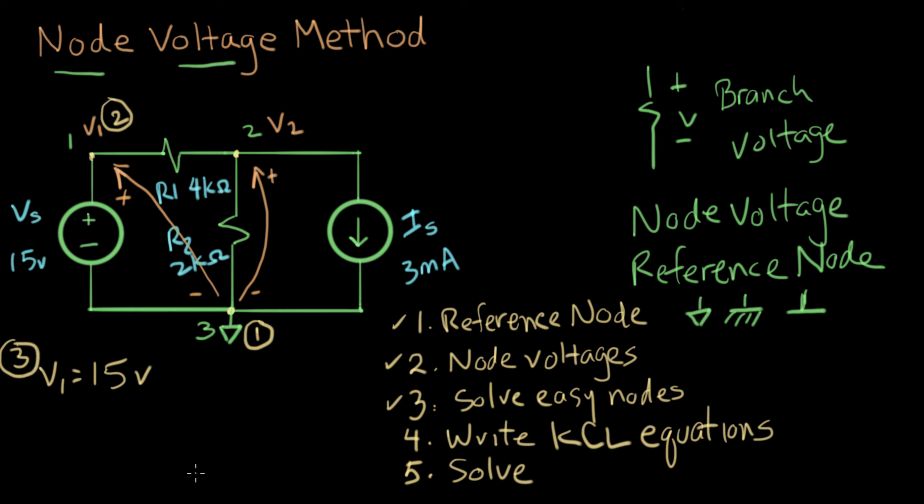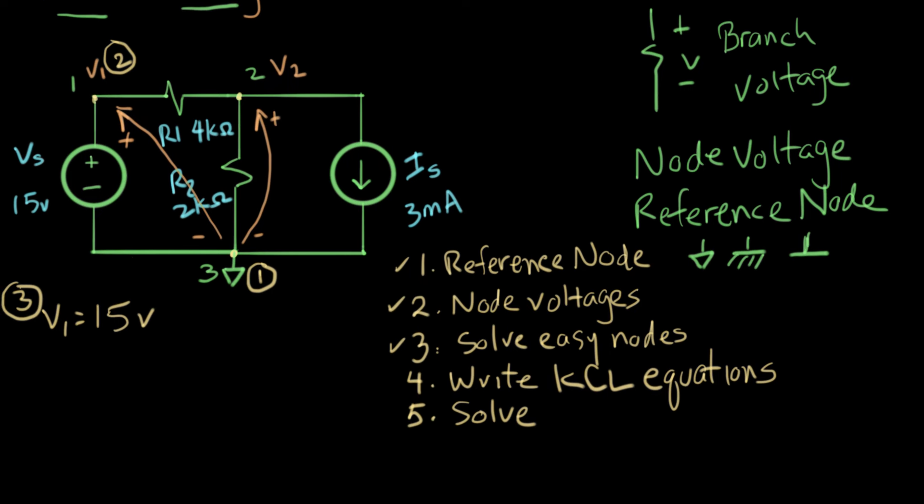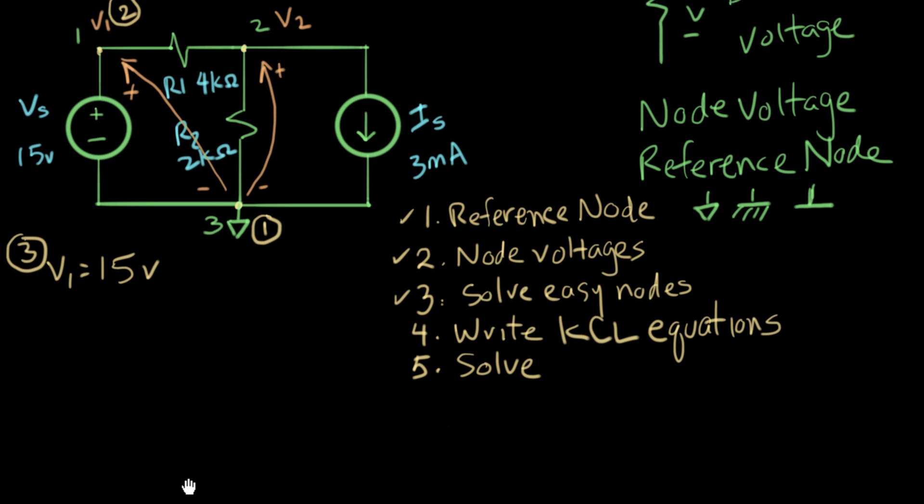Now we're ready to go to step four. Step four is write the Kirchhoff's current law equations directly from the circuit. And we're going to do this in a special way. But the current law, we're going to perform at this node here, at node two. We're going to write the current law for this. And that means we've got to identify the currents. There's a current. We'll call that a current. And that's a current.